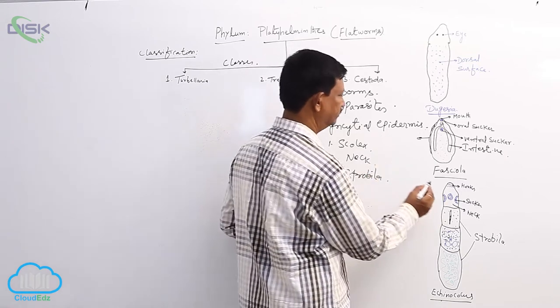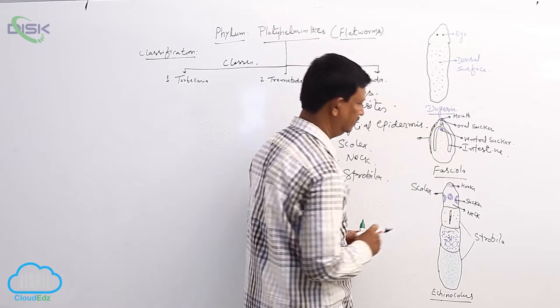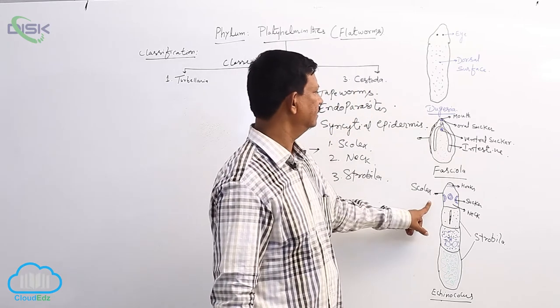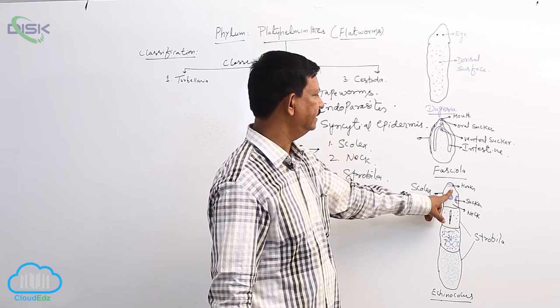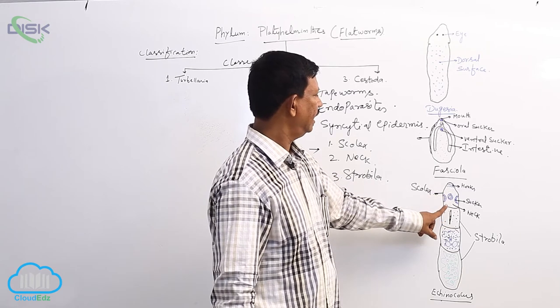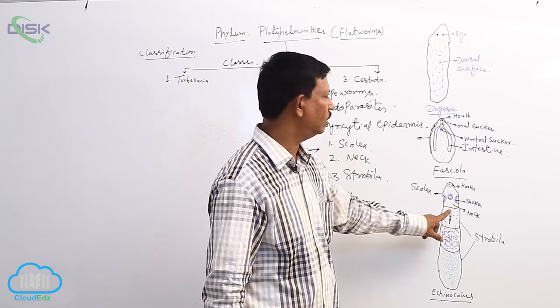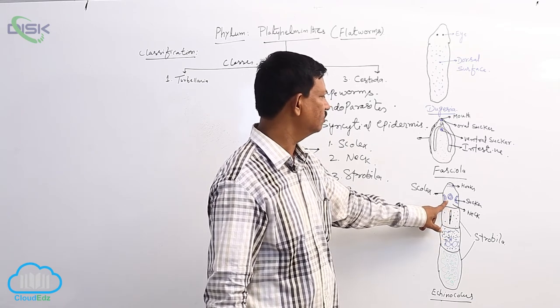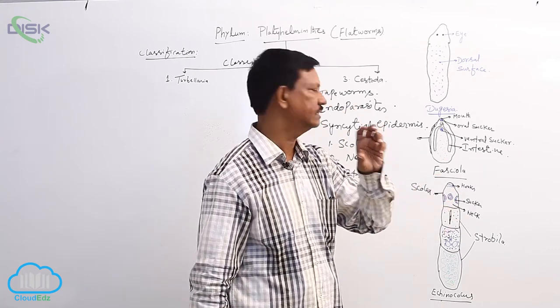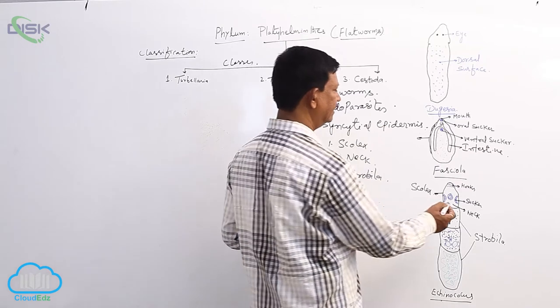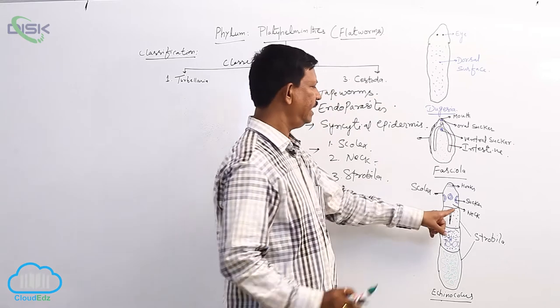In the scolex region, two rows of hooks are present at the anterior end of the body, and there are four suckers: one dorsal, one ventral, and two lateral. They are highly muscular, and with the help of hooks and suckers, it attaches to the host intestine. Behind that is an unsegmented part known as the neck.